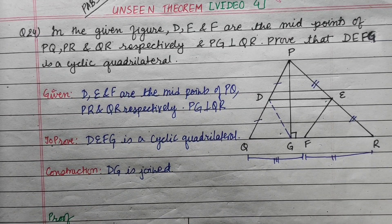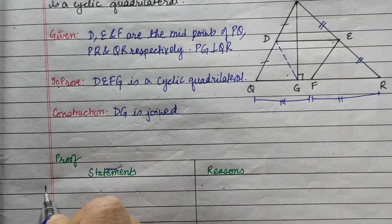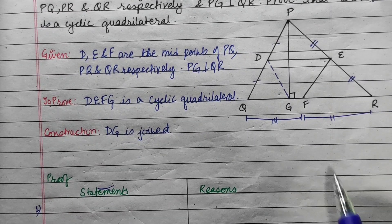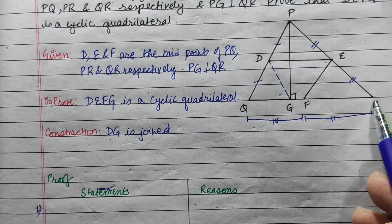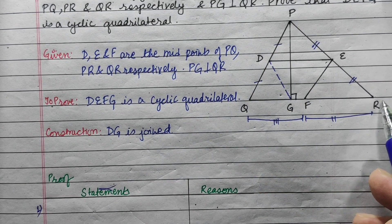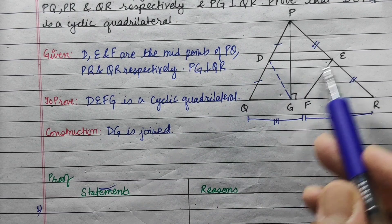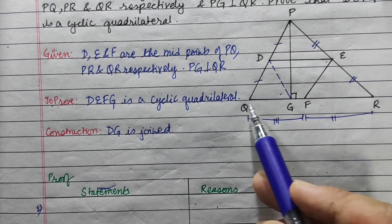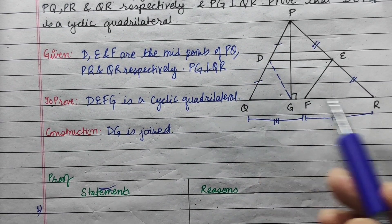So, for the first step, by the midpoint theorem from class 9: D is the midpoint of PQ and E is the midpoint of PR, so DE is parallel to QR and DE is half of QR. Therefore, DE is parallel to QR.